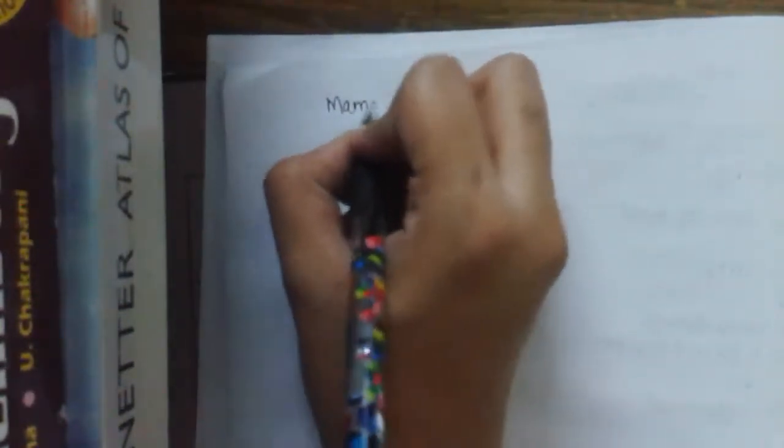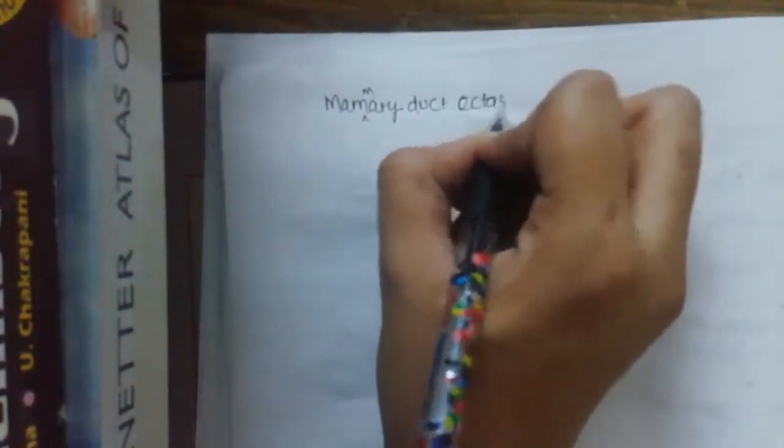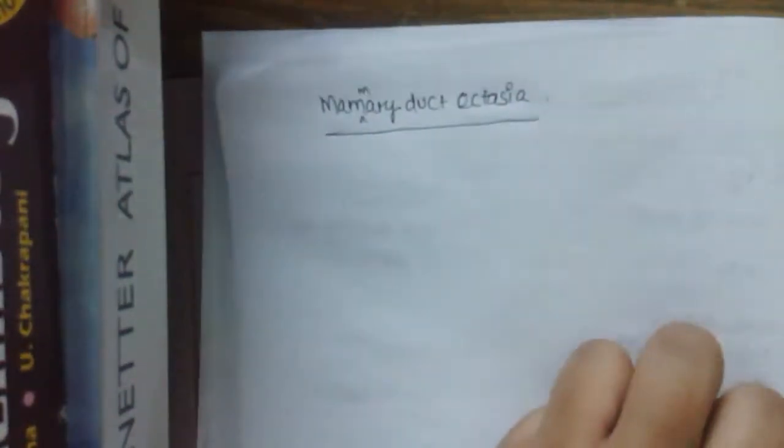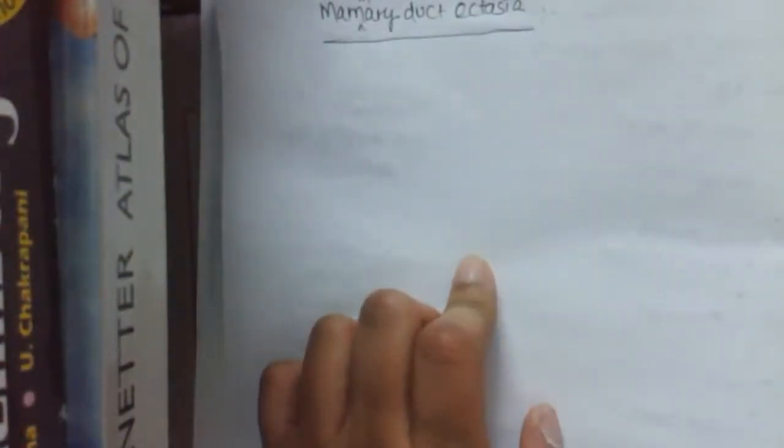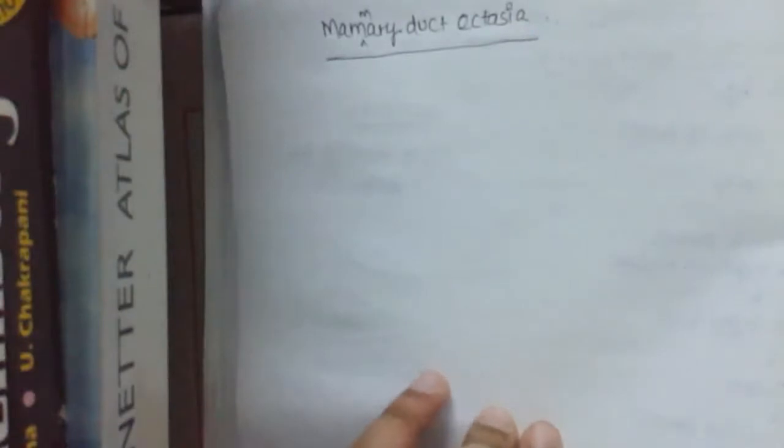So now let us discuss mammary duct ectasia and fat necrosis. The first one is mammary duct ectasia. In this, the mammary ducts are dilated and filled with inspissated secretions. From now let us draw the cross sectional area, the histological pictures. Let me draw a cross picture.